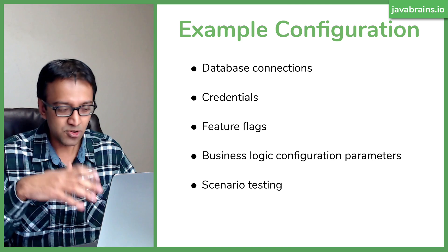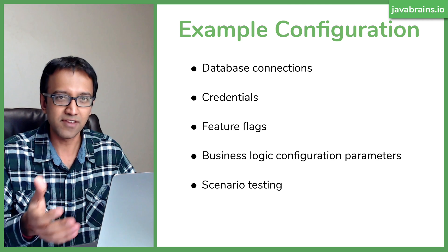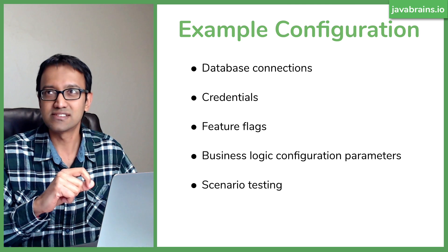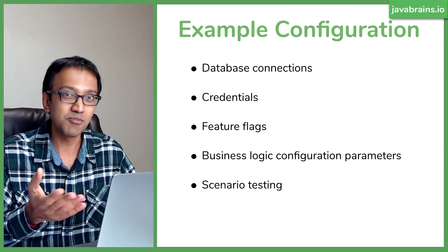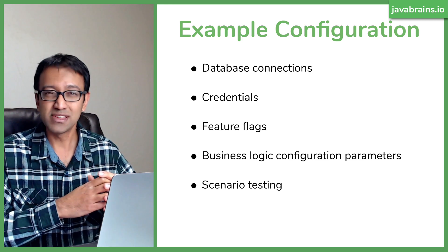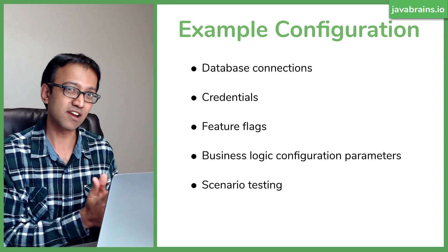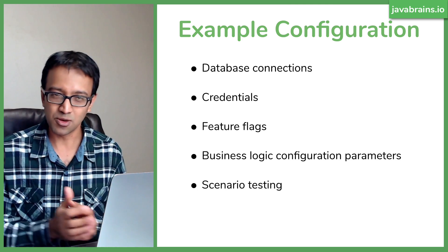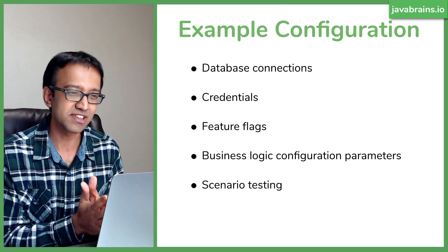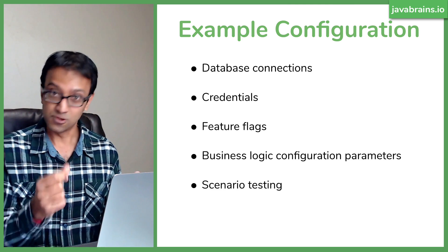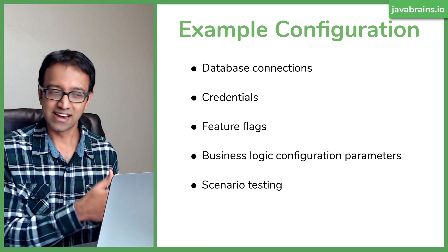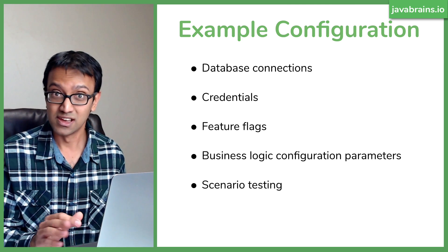Scenario testing — also known as A/B testing — is a similar concept. You have two varieties of a feature and want to enable one for a subset of traffic, say 10% to scenario A and 90% to scenario B. The scenario could be a business scenario or a refactored microservice. You gradually scale it up using configuration: 10% today, 20% tomorrow, 30% the day after.